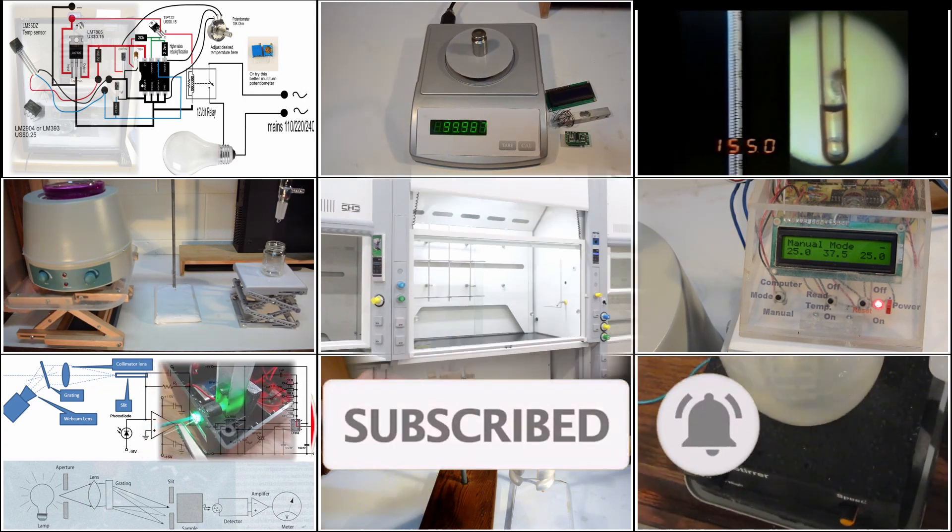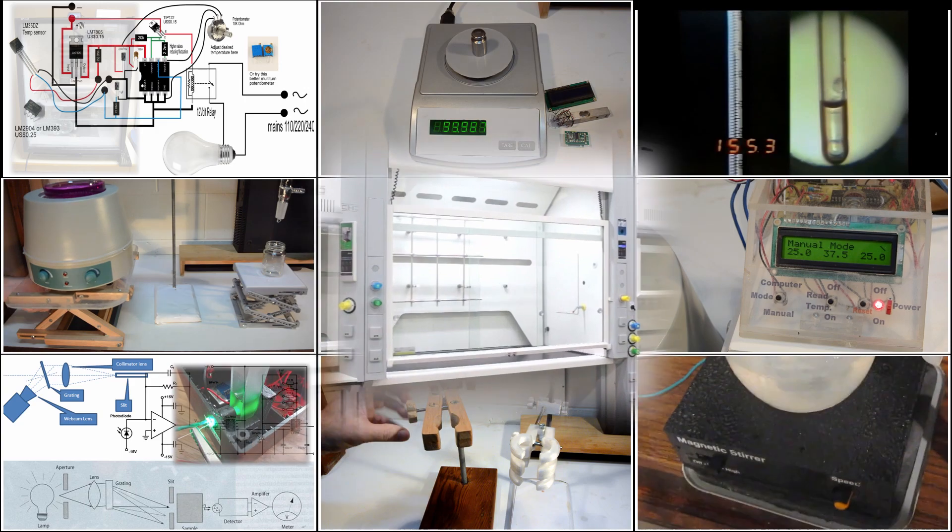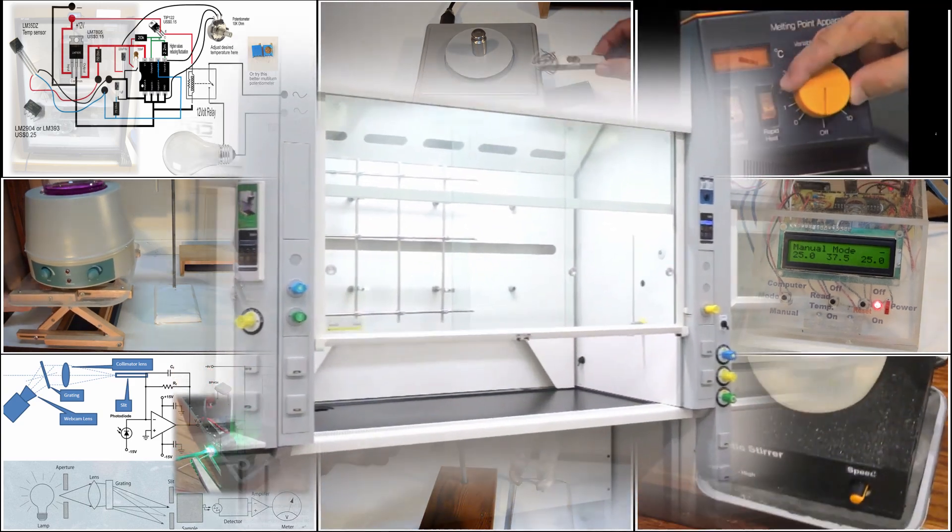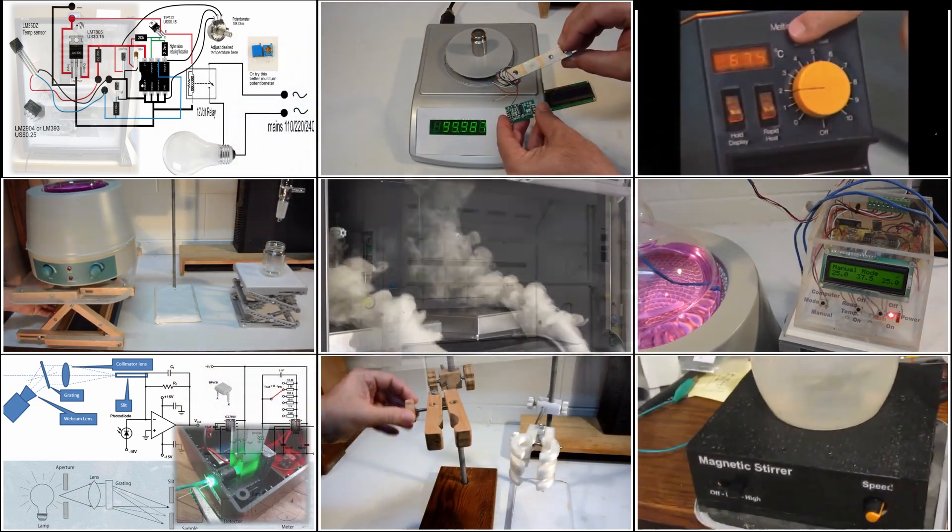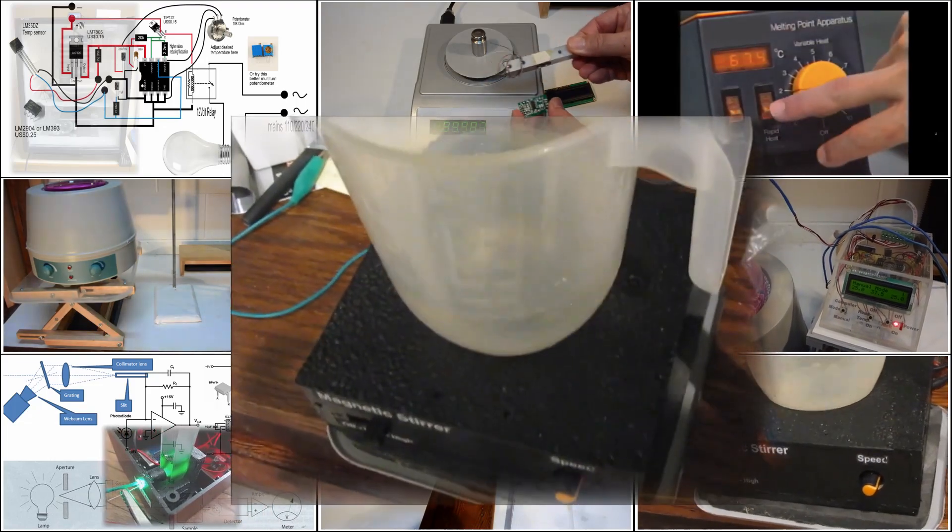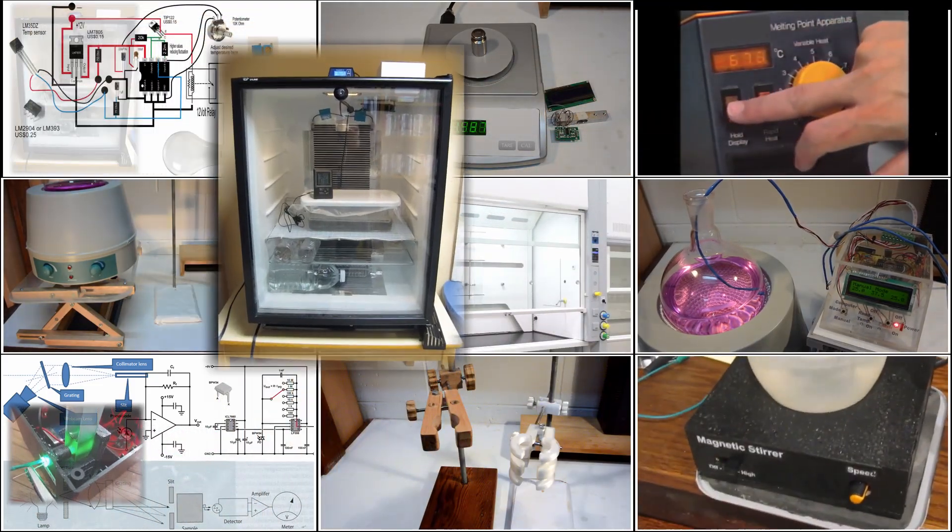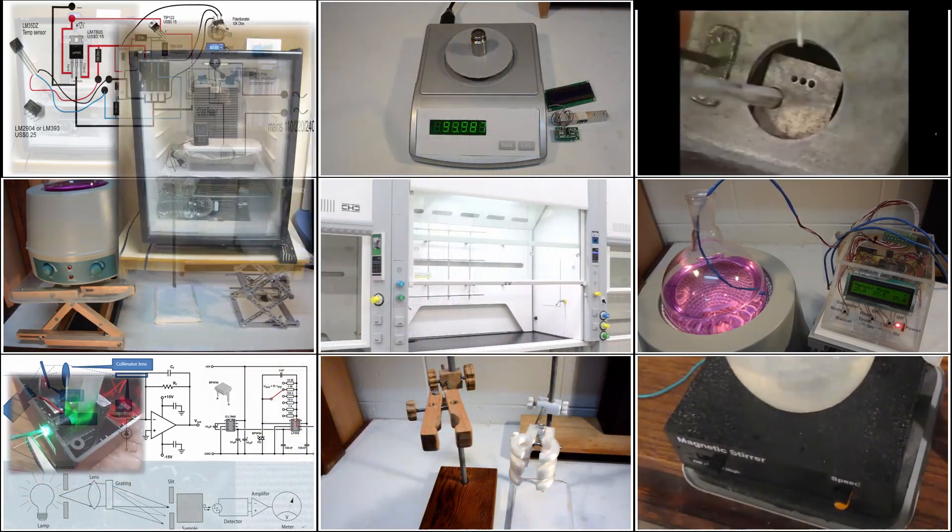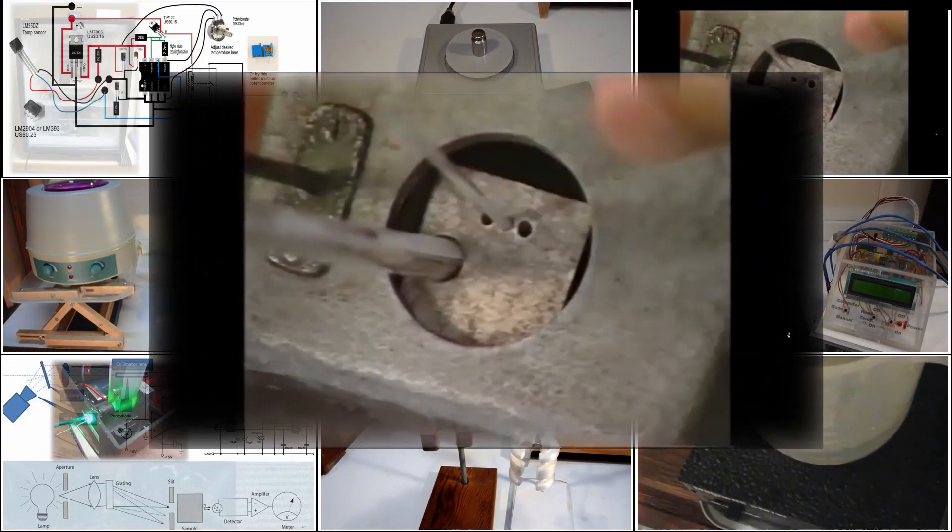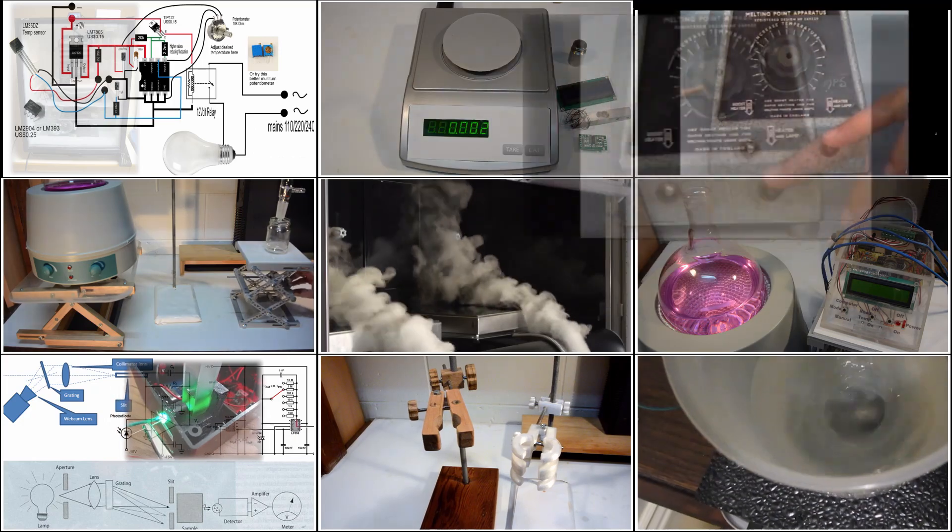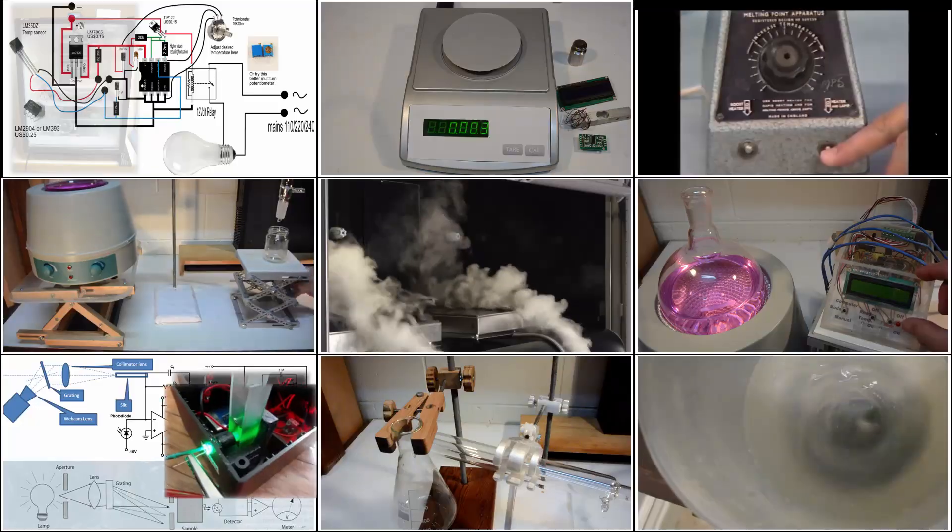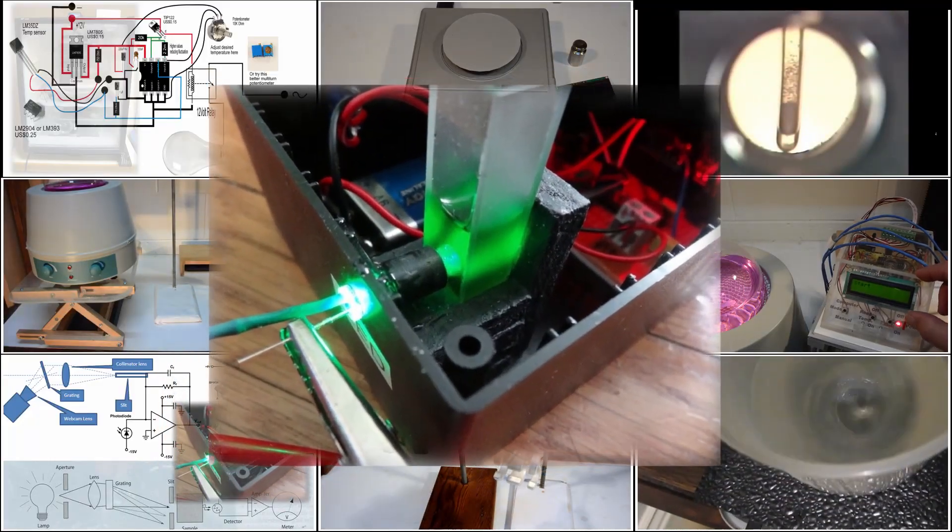Other planned DIY equipment include a fume cupboard, which is an essential safety item, a magnetic stirrer from salvaged parts from a broken desktop computer and discarded washing machine, a temperature controlled incubator for microbiological experiments, a melting point apparatus to help identify synthesized chemicals, and continuing the theme of quantification, a DIY spectrophotometer for colorimetry and spectrometry.